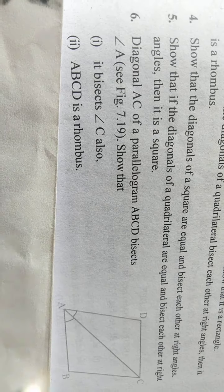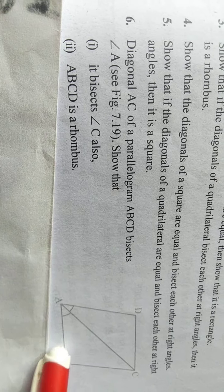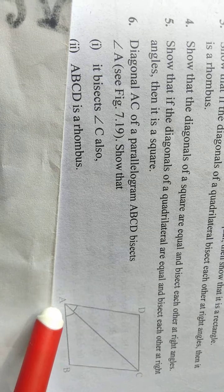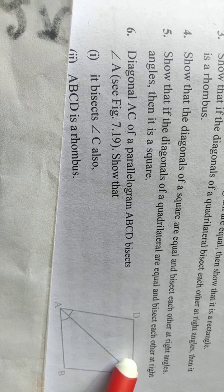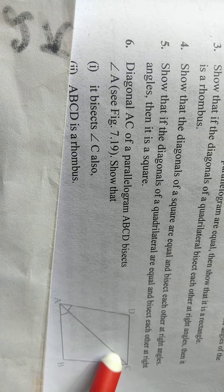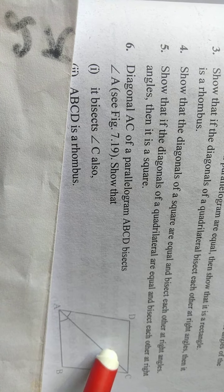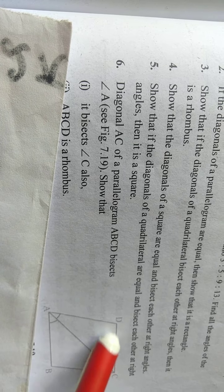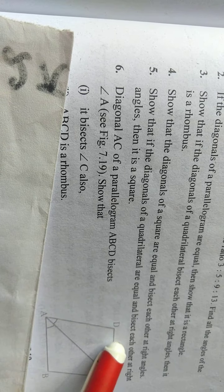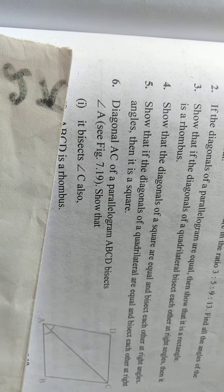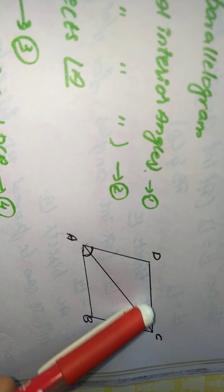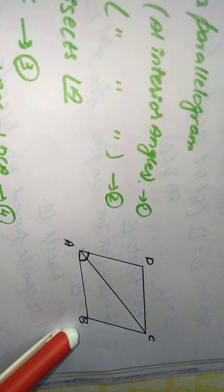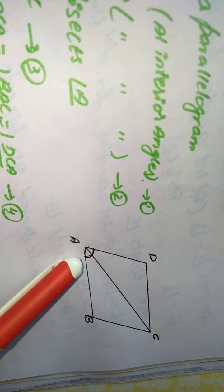Here is your 6th question, children. They have given a parallelogram ABCD where the diagonal AC bisects angle A. Your first task is to prove that this diagonal also bisects angle C, and you also have to prove ABCD is a rhombus. In order to prove ABCD as a rhombus, you have to prove all sides are equal. They have given ABCD as a parallelogram. If DC and AB are parallel lines and AC is a transversal...